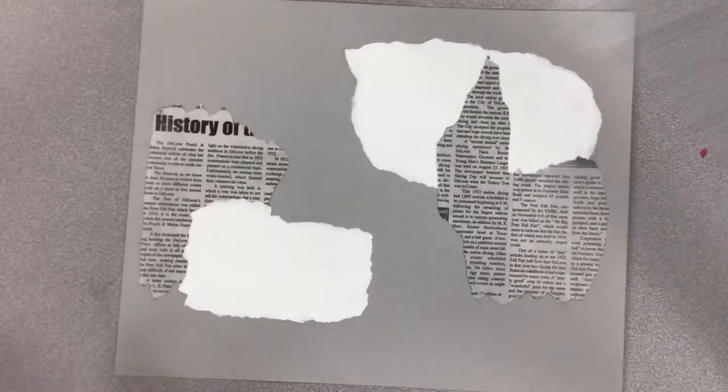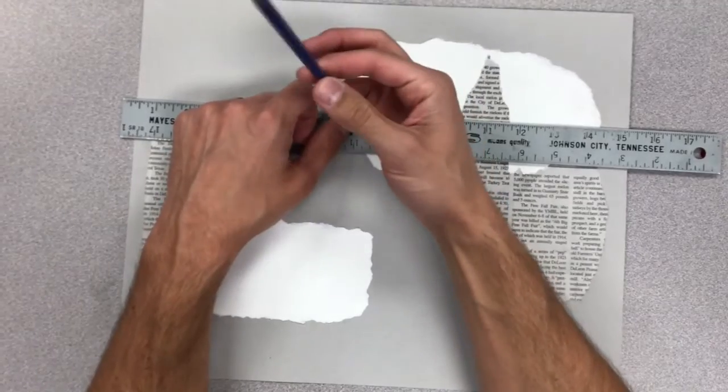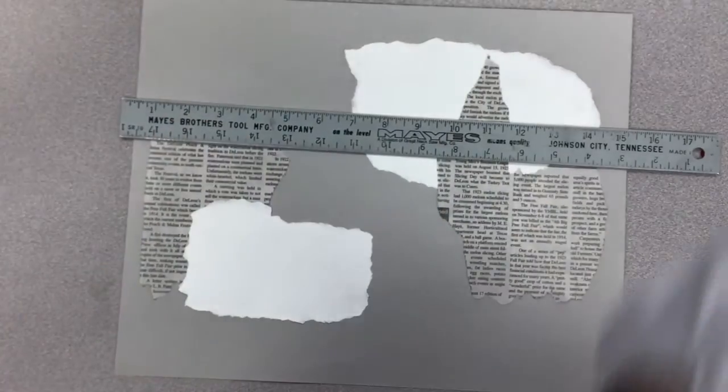The way we're going to be doing this is we're going to be using a 2H pencil. That's a harder pencil that doesn't leave as much graphite behind.